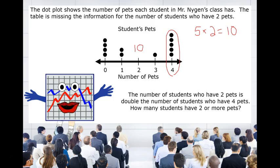we want to add how many people have 2, 3, or 4 pets. So we would add 10 plus 1 plus 5. We get a total of 16 students.